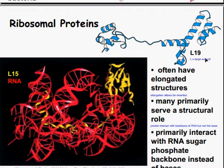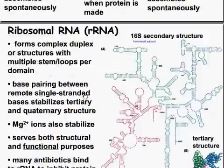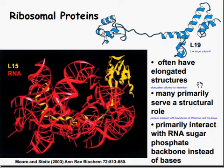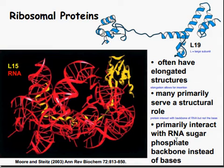Here are the L15 and L19 rRNA, part of the large subunit. They often have an elongated structure, which allows for insertion of various molecules — amino acids. Many primarily serve a structural role to help maintain the shape of the large subunit. Proteins interact with the backbone of the RNA but not the base — they primarily interact with the RNA sugar phosphate backbone instead of the base.